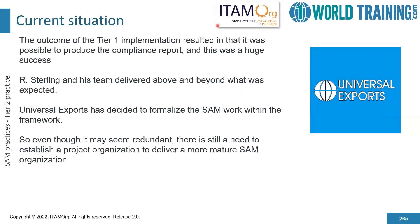Let's take stock of what happened with Universal Exports. Tier one was implemented and it was a huge success — they were able to produce the compliance report for the first time. That was enabled by R. Sterling and his team of consultants, and they delivered more than what was expected. Now they decide to formalize the SAM work within the framework and make it tier two, which means there is probably a need to establish a proper project organization to deliver an even more mature SAM organization. Tier two allows us to move from the tier one, where everything is established in a basic way, and move on to a more mature SAM environment and practices.